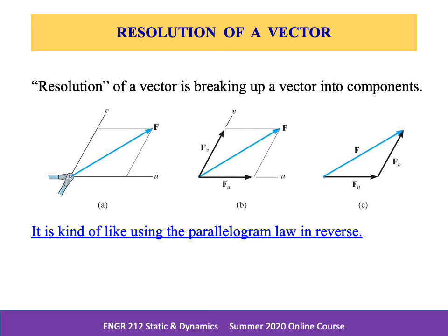The force components u and v are then established by joining the tail of F to the intersection points on the u and v axes, as shown in part b. This parallelogram can then be reduced to a triangle, which represents the triangle rule, shown in figure 2-8c. From this, the law of sines can then be applied to determine the unknown magnitudes of the components from trigonometry.